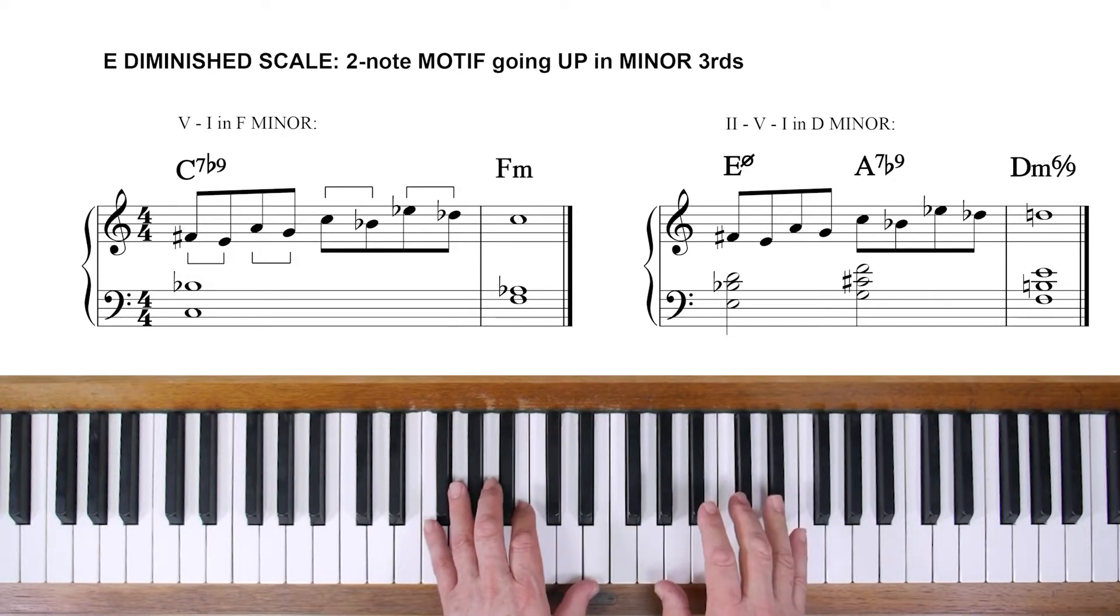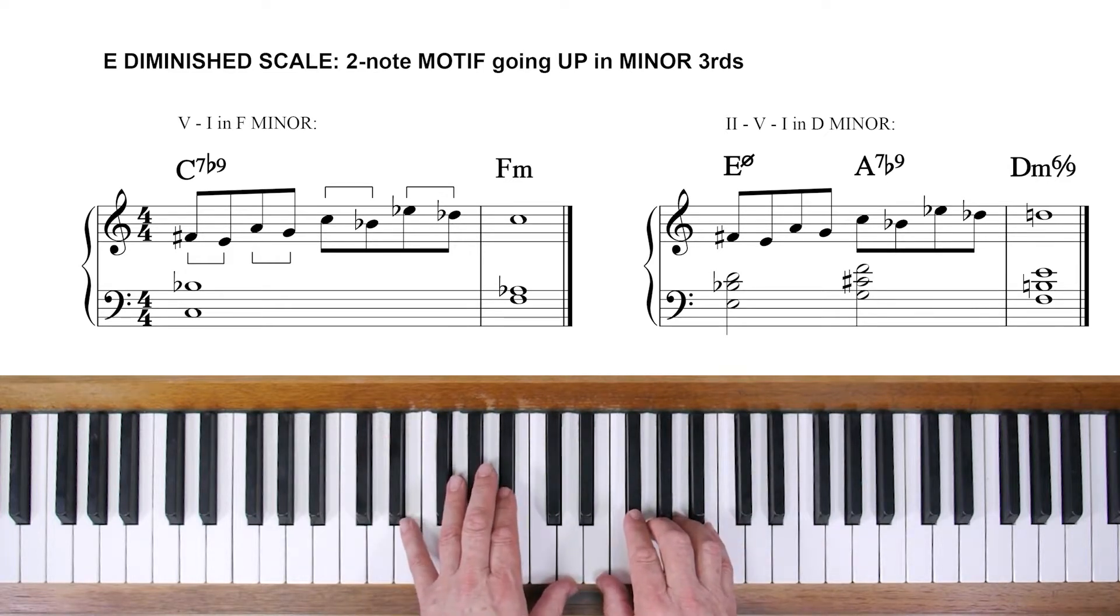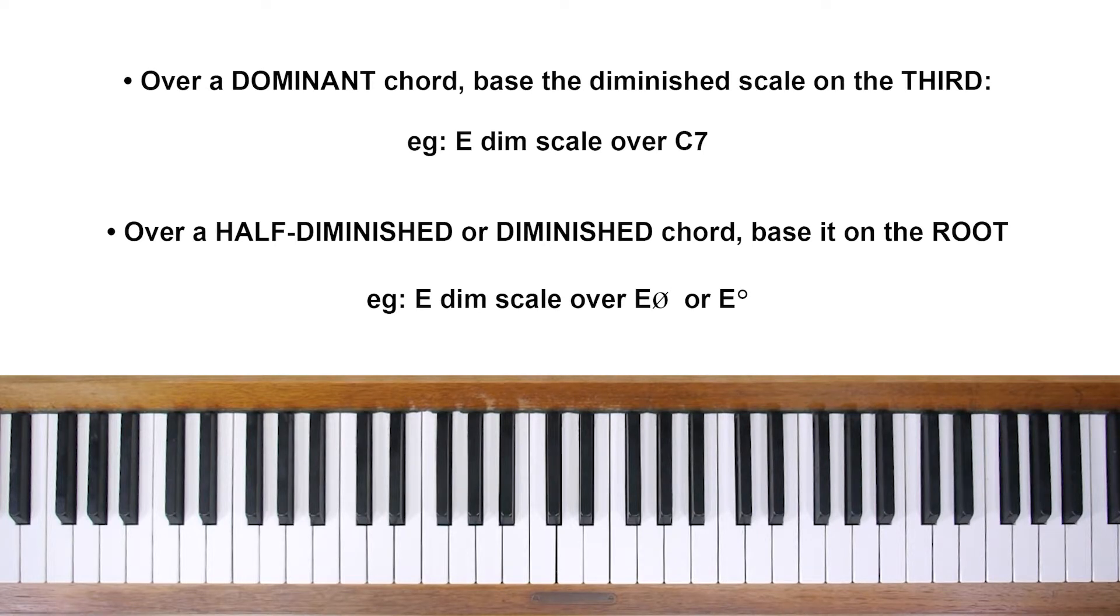So exactly the same right hand over C7 or over E half diminished. Just remember, over a dominant chord, base the diminished scale on the third. On a diminished or half diminished chord, base it on the root.